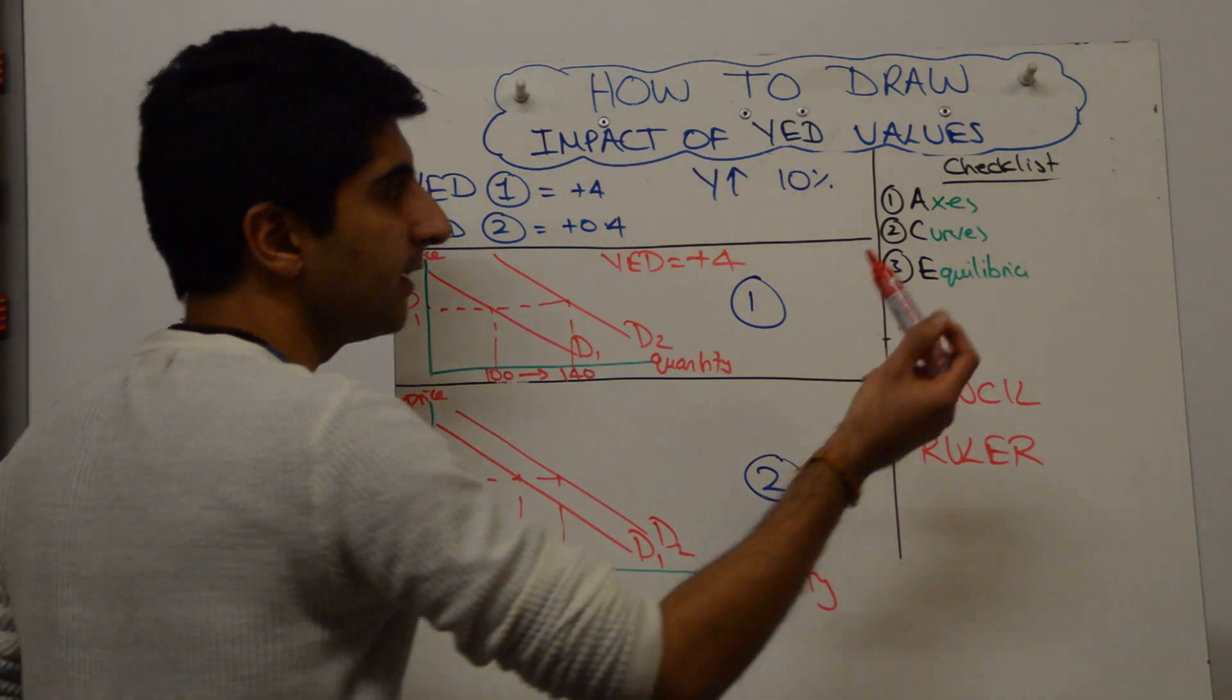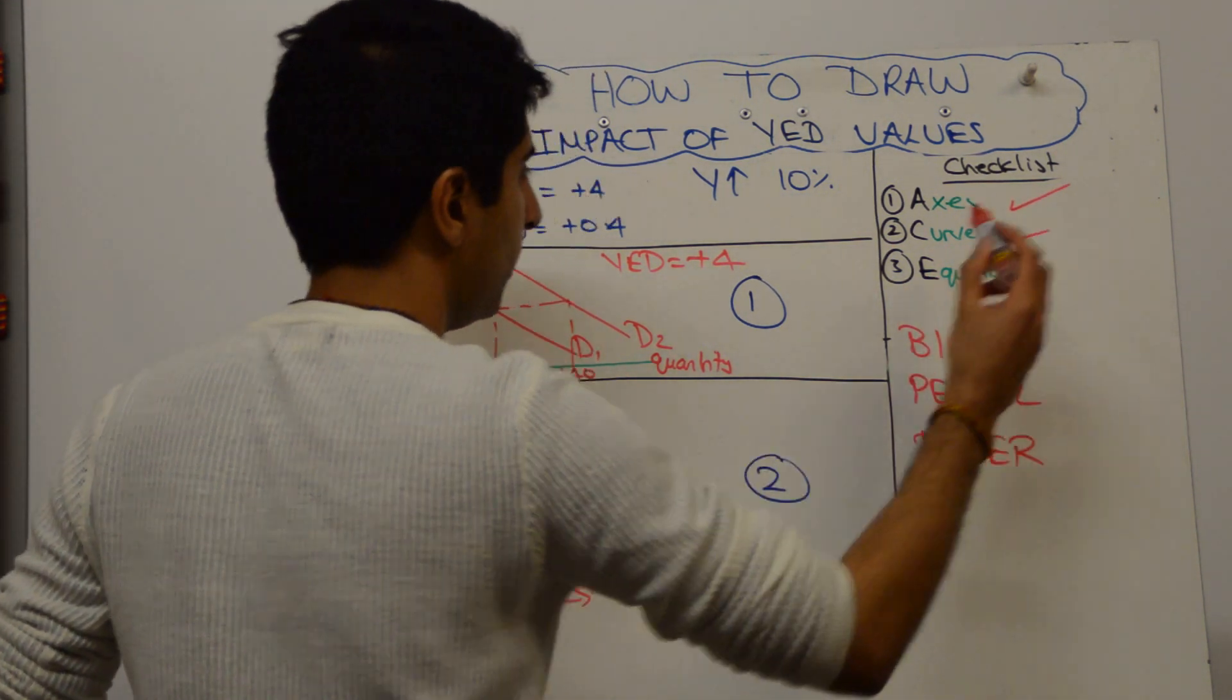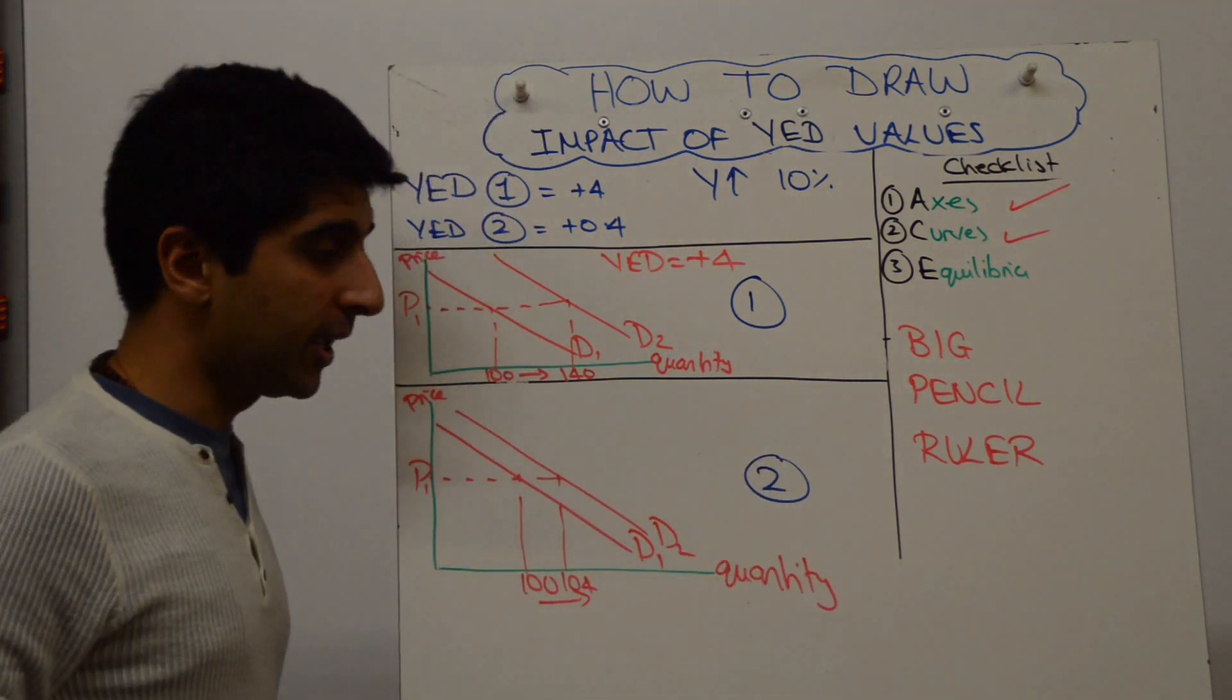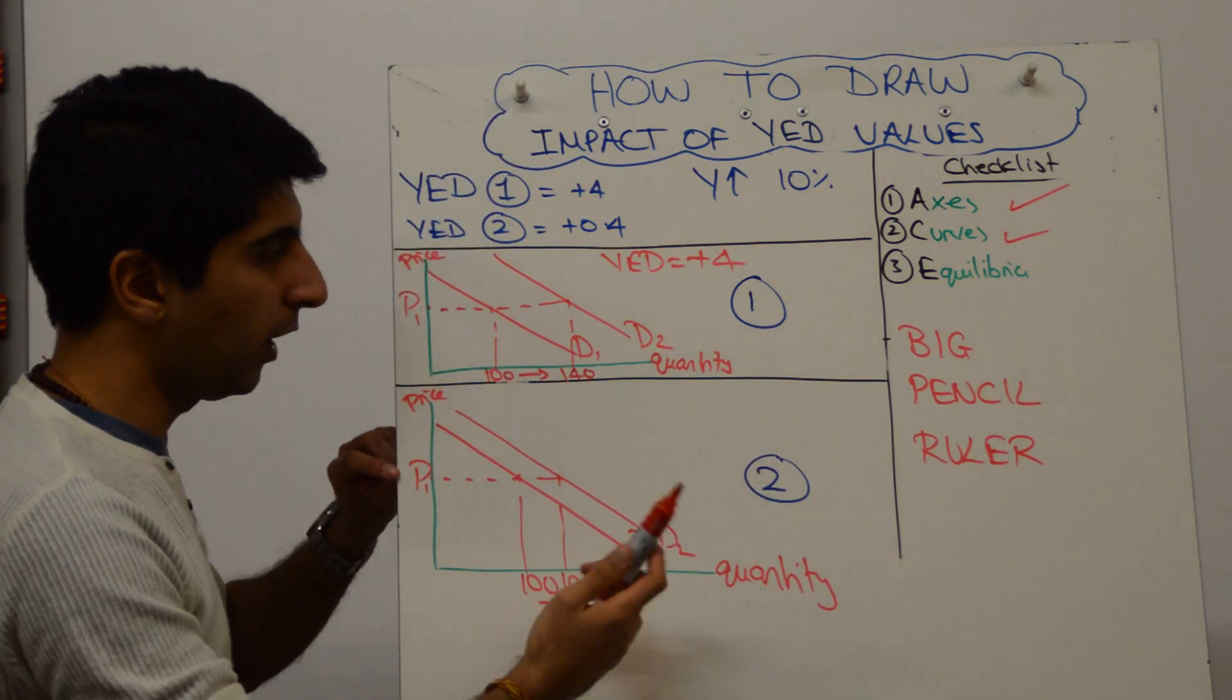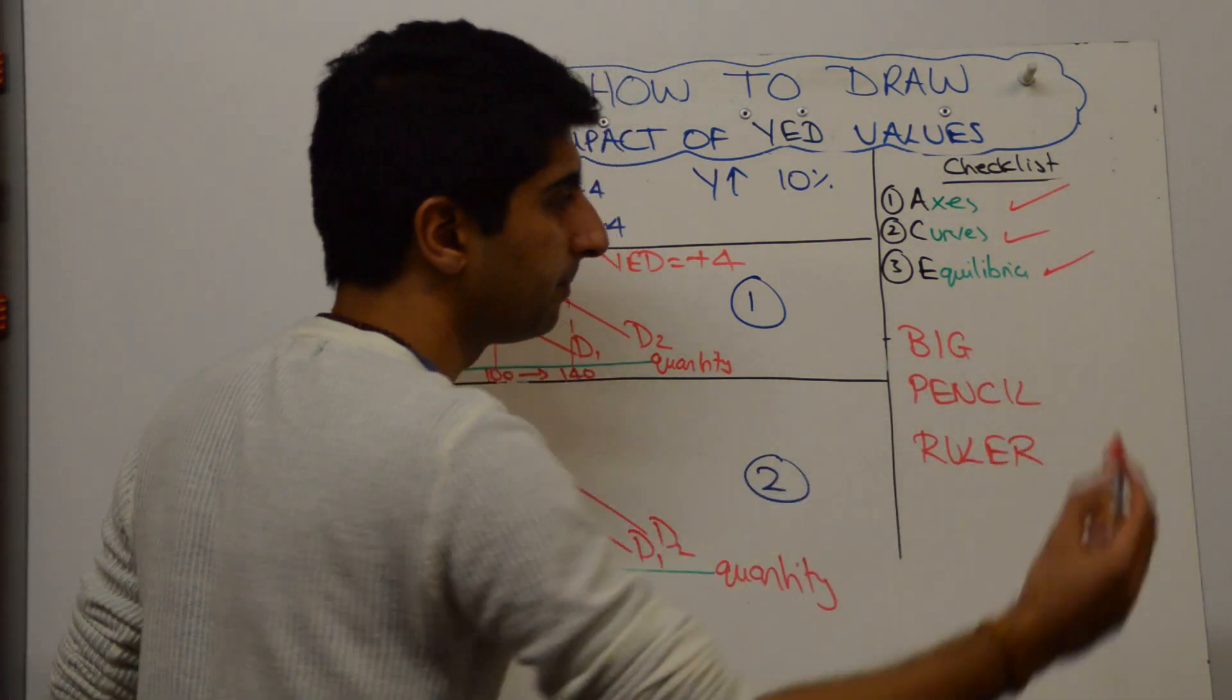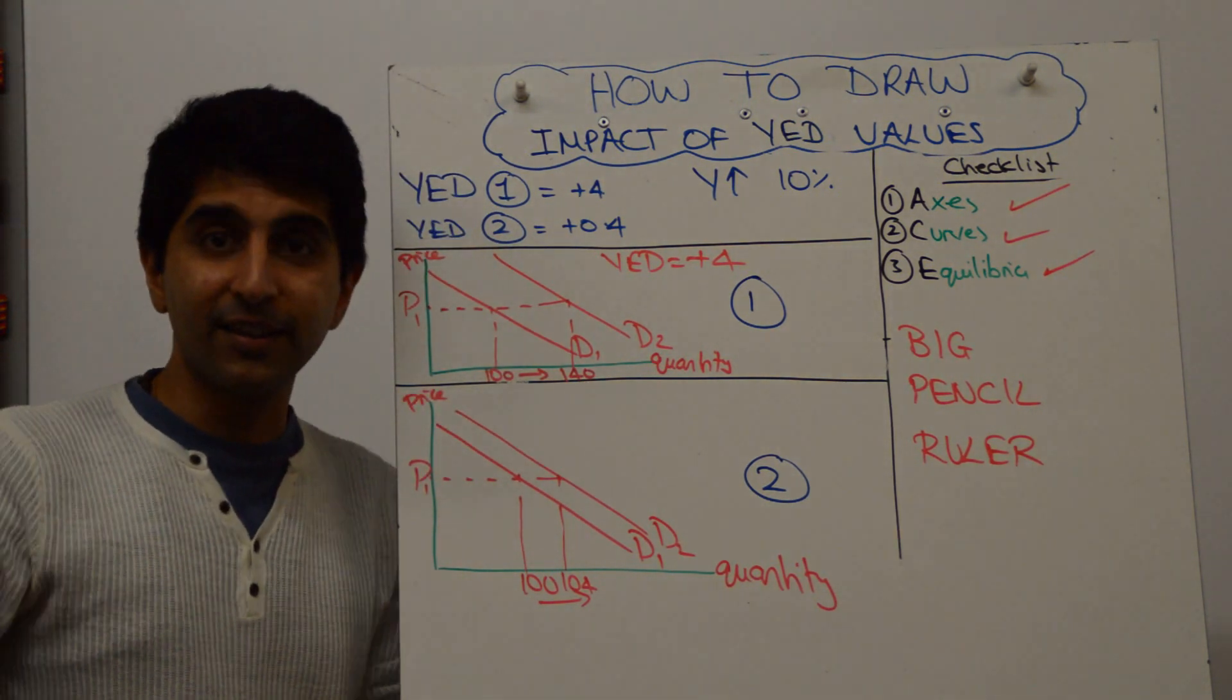Always check that you label axes, which we have, that you label curves, which we have all the way through. There's no equilibrium here, but we have labeled our P's and our quantities very nicely as well. Alright. Thanks for watching guys. See you in the next video.